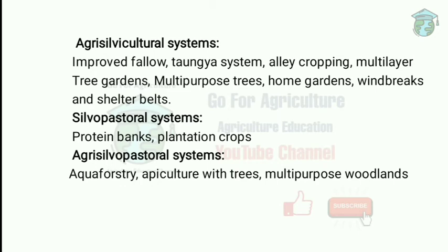In the silvopastoral system, we have protein banks and plantation crops. For example, cattle under coconuts in Southeast Asia and the South Pacific — plantation crops like tea and coffee are grown. In the agrisilvopastoral system, we have aquaforestry, apiculture with trees, and multi-purpose woodlands.